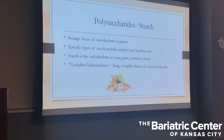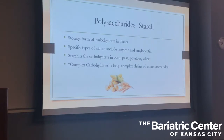Starting with starch — probably the most commonly known polysaccharide. Starch is the storage form of carbohydrates in plants. When you eat corn, peas, potatoes, or wheat, the carbohydrate in those things is starch. If you hear the words amylose or amylopectin, those are specific kinds of starch. When you hear the term complex carbohydrates, that basically refers to long, complex chains of monosaccharides — like starch.